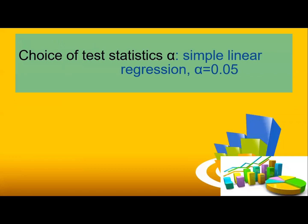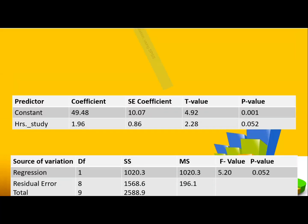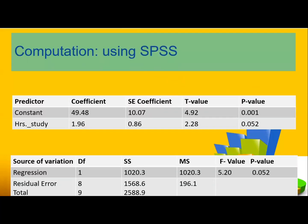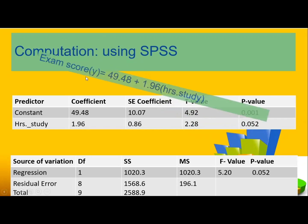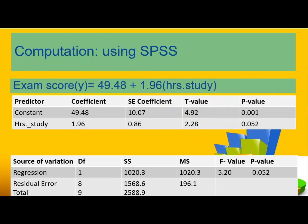The null hypothesis: study hours is NOT a predictor of examination score. The alternative hypothesis: study hours IS a predictor of examination score. The choice of test statistic is simple linear regression at alpha = 0.05.